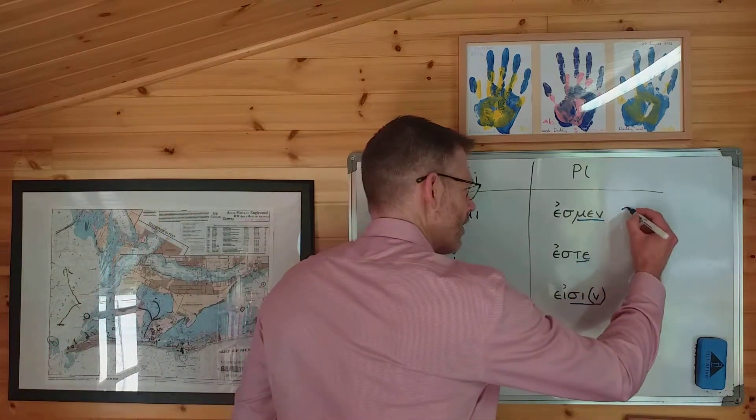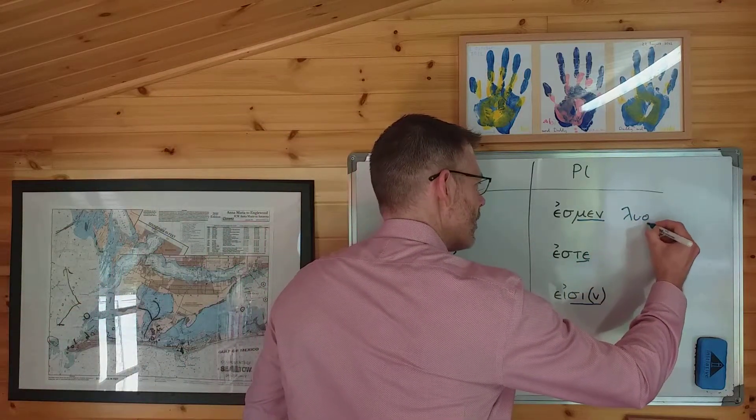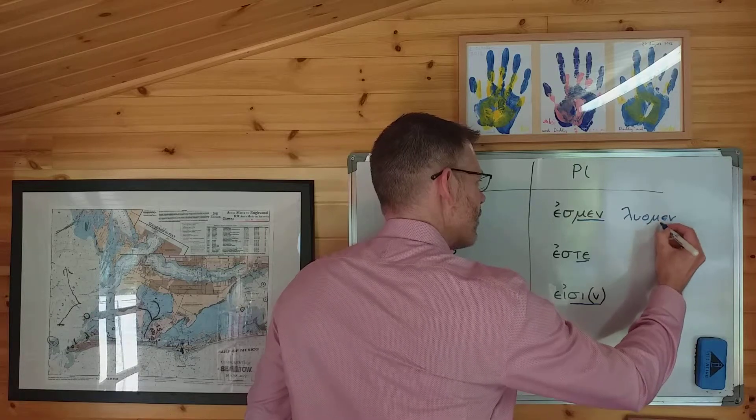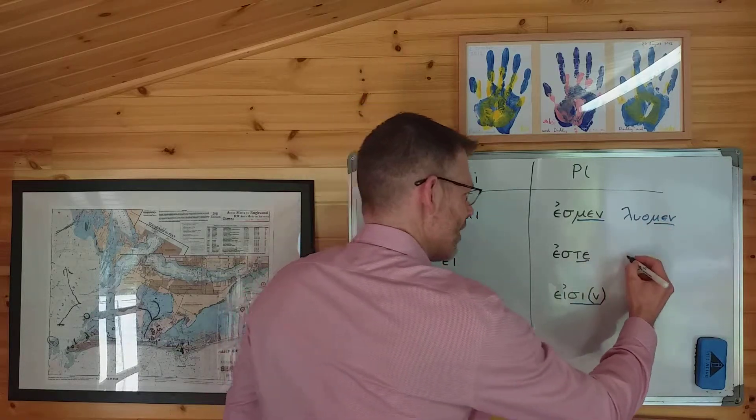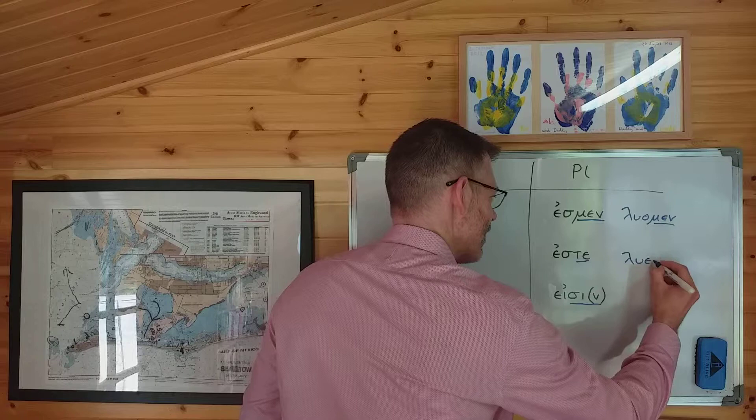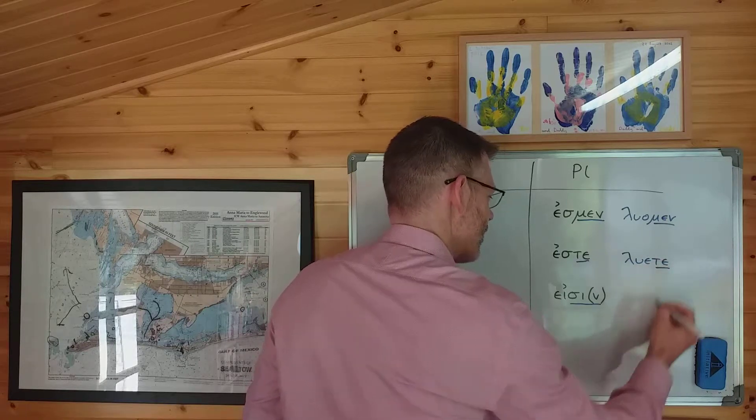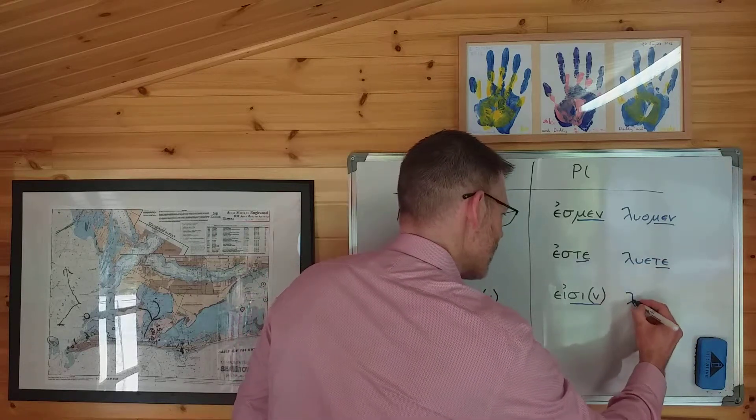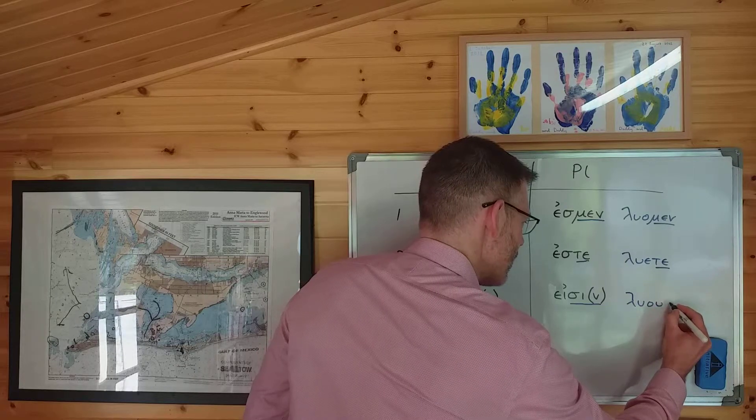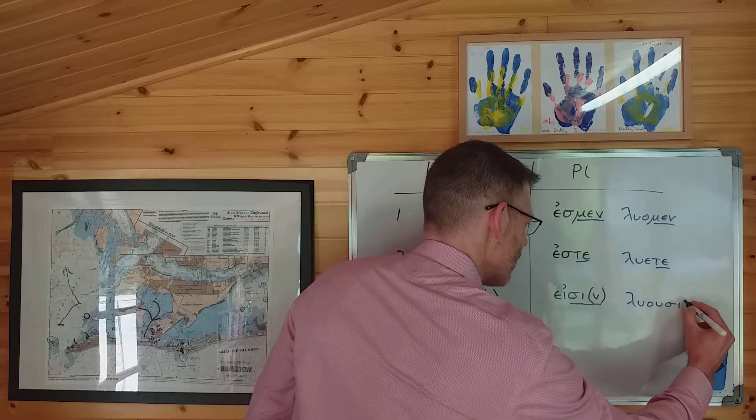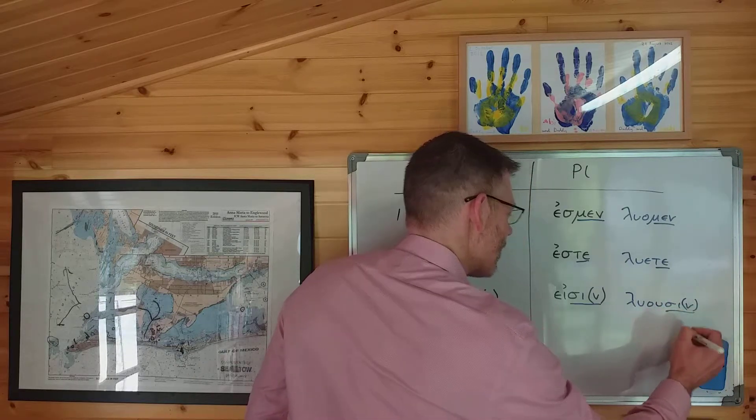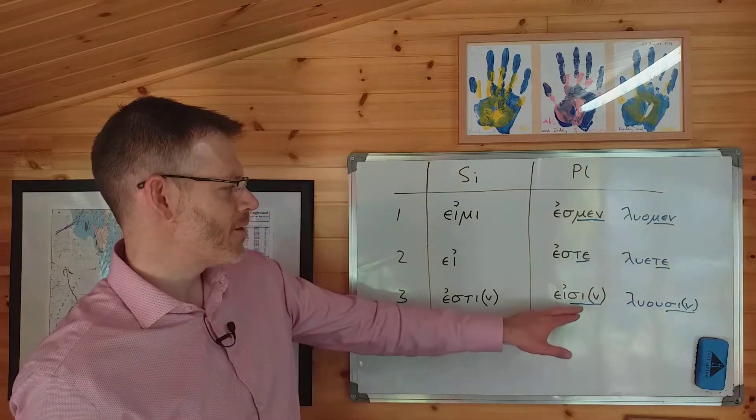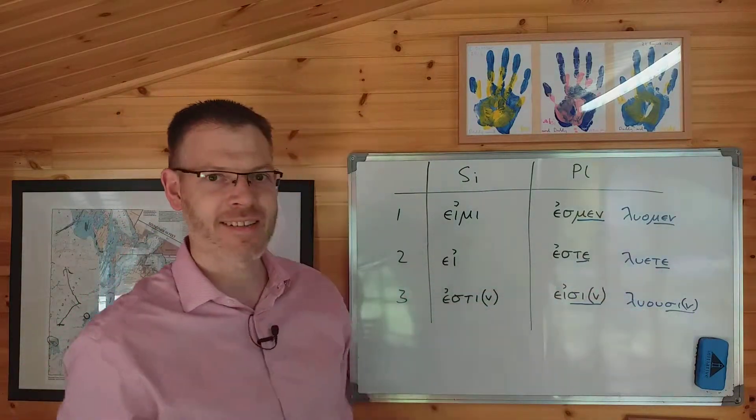However, if you've been paying really close attention, you might notice, as Duff points out, that the endings in the plural are not entirely dissimilar from the endings of λύω in the plural. λύω, λύεις, λύει, well, that's all pretty different. λύομεν, λύετε, and λύουσιν, again with the movable nu. They're not entirely dissimilar, are they?